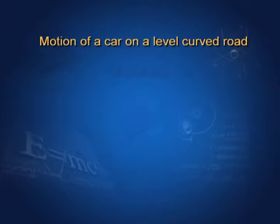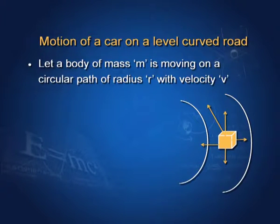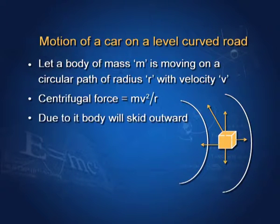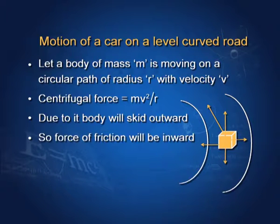Now we will discuss motion of a car on a level curved road. Let a car of mass M be moving on a circular path of radius R with velocity V. As a car cannot bend, how does it obtain the centripetal force? The centripetal force required will be Mv² upon R. Due to the absence of a source of centripetal force, the car will tend to skid outward. So the force of friction will act in the inward direction.